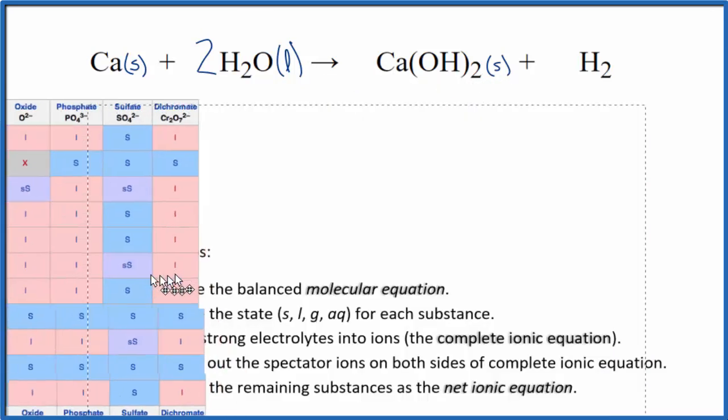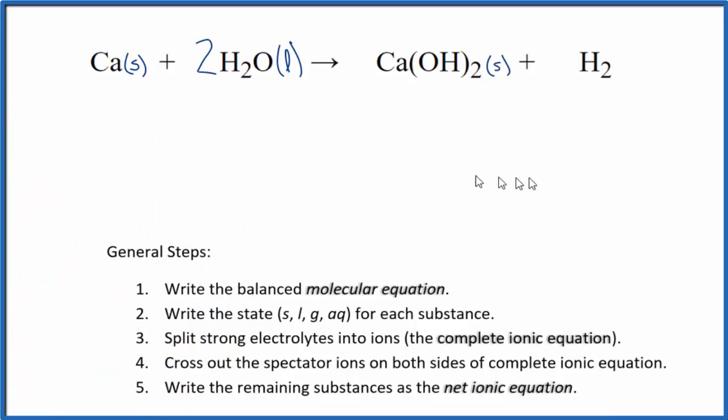When we look at the hydrogen, that's a gas, so we'll write G after that. Now that we have our states, we can split strong electrolytes into their ions for the complete ionic equation. When you look at this, there are no strong electrolytes. We have a solid, a liquid, a solid, and a gas. We don't split those up in net ionic equations. So essentially, this is the net ionic equation for Ca plus H2O.